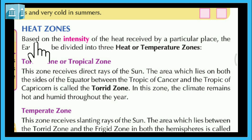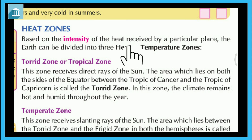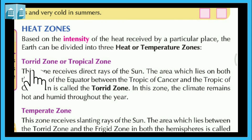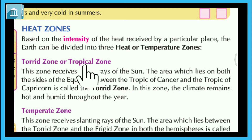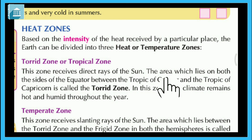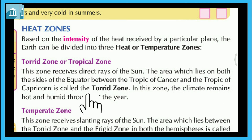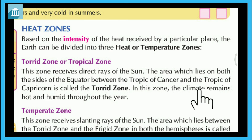Heat zones: Based on the intensity of the heat received by a particular place, the earth can be divided into three heat or temperature zones. Torrid zone or Tropical zone: This zone receives direct rays of the sun. The area which lies on both sides of the equator, between the Tropic of Cancer and the Tropic of Capricorn, is called the Torrid zone. In this zone, the climate remains hot and humid throughout the year.